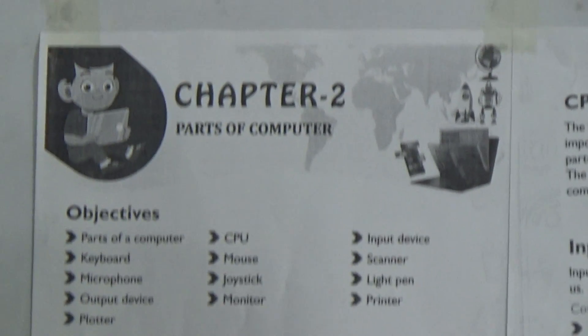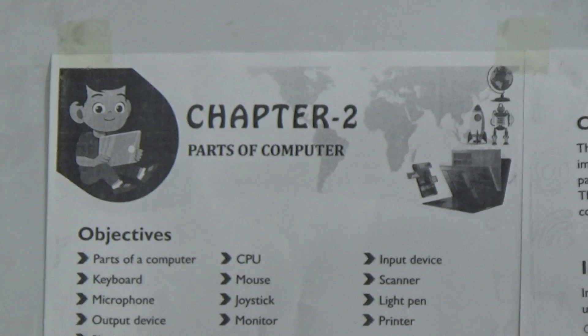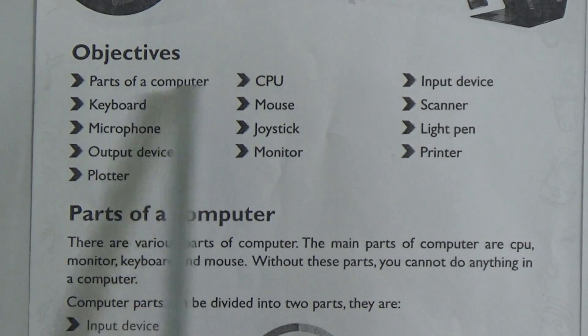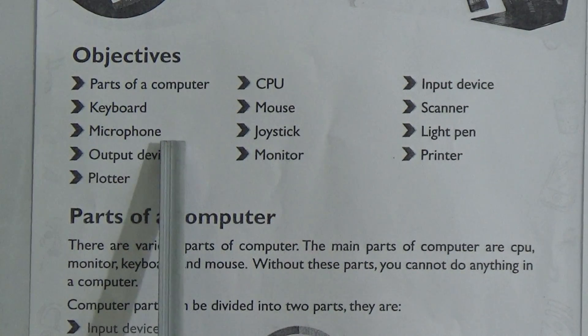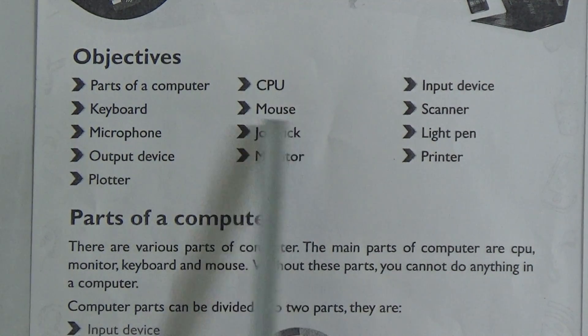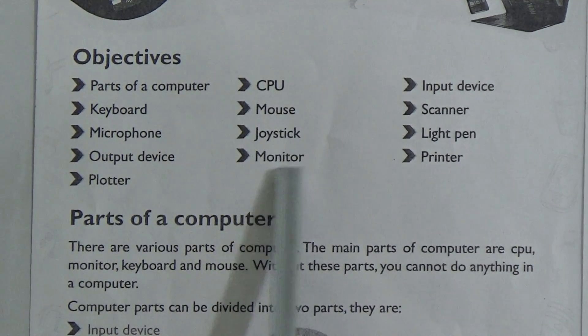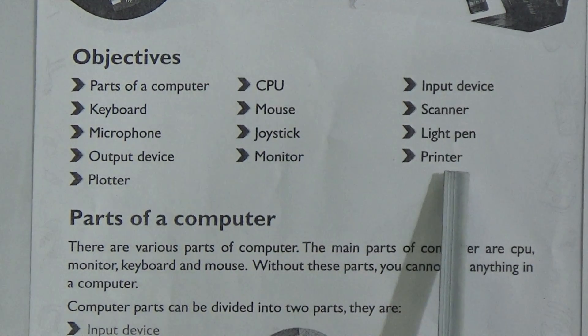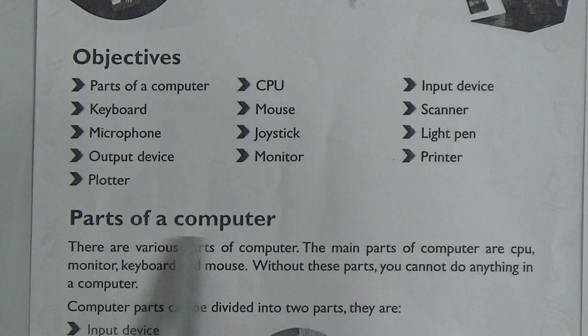Chapter two name is 'Parts of a Computer.' Dear learners, you know that a computer has different types of parts. Here are the learning objectives: parts of a computer include keyboard, microphone, output device, plotter, CPU, mouse, joystick, monitor, input device, scanner, light pen, and printer.